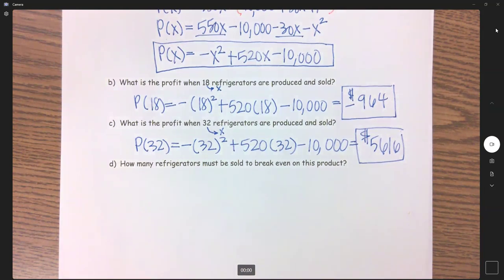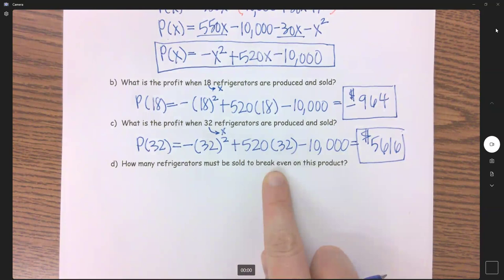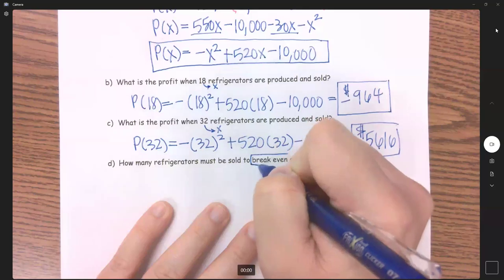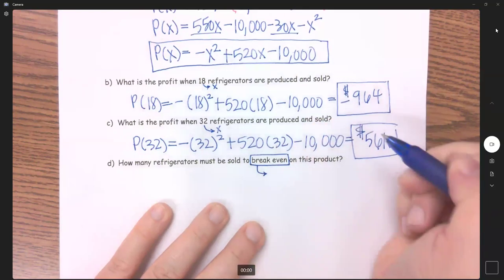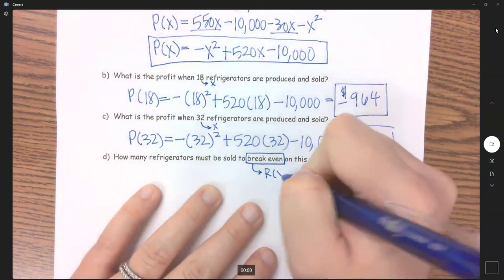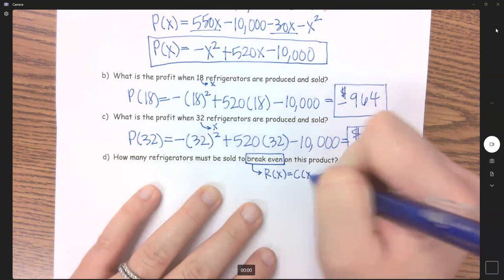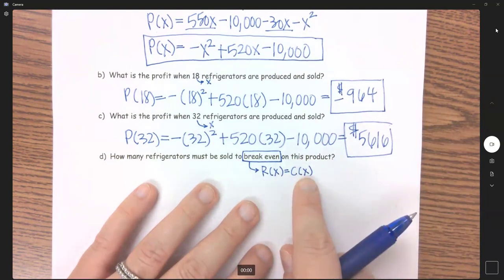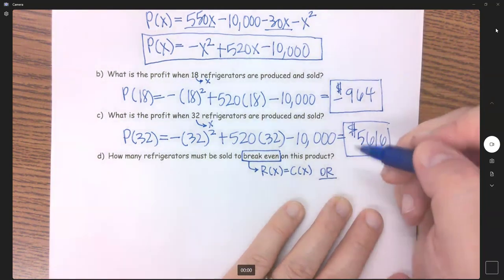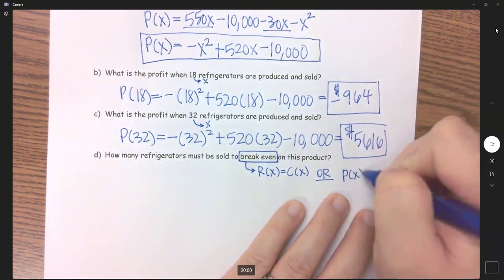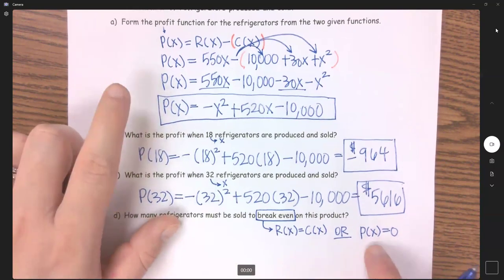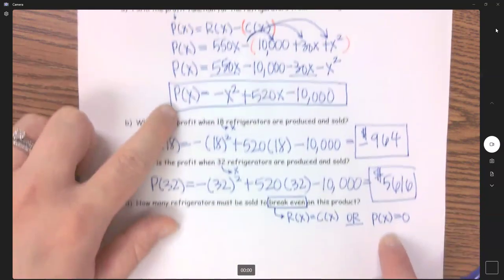Now part D wants to know how many refrigerators must be sold to break even. Now with break even, we can find this two different ways depending on how the information is given to us. The first way to break even is when your revenue equals the cost, so how much you are bringing into your business equals the same amount that you are putting in. Or we can do what we did last time where we said that profit equals zero. Now because I already have my profit function, this is going to be the easiest method to use. So now I'm going to put a zero in for this P of X.